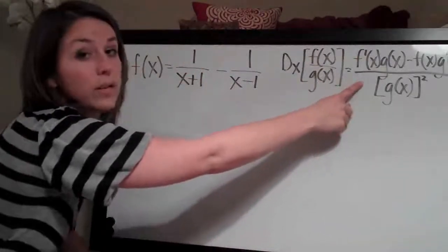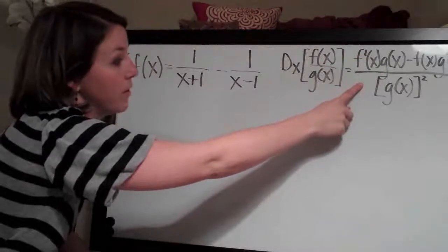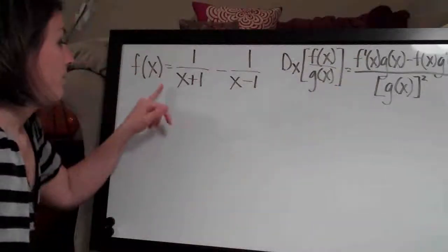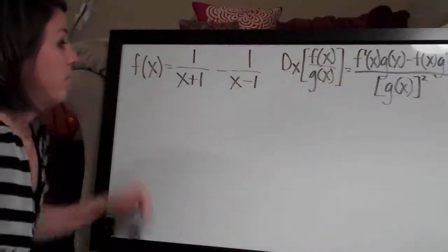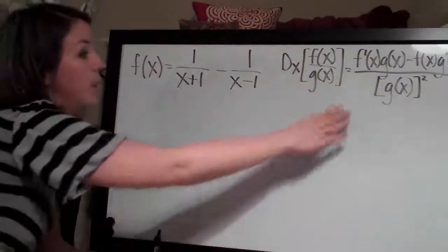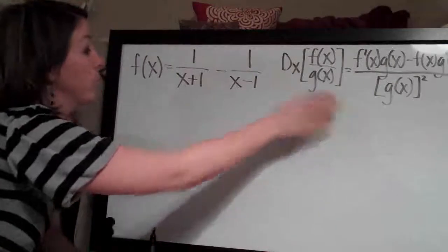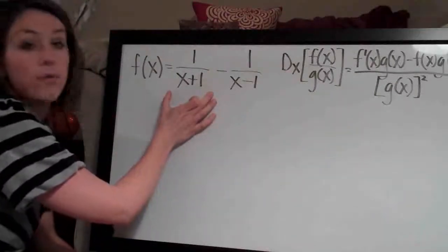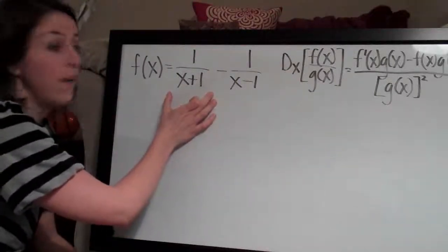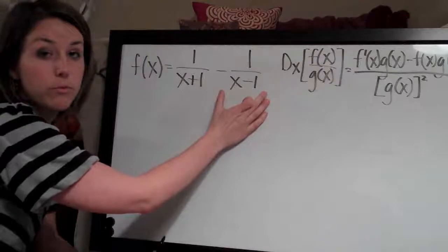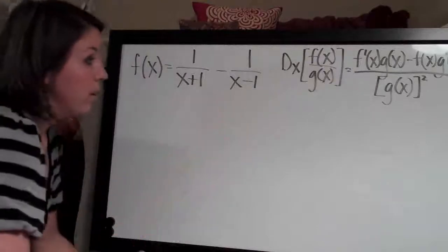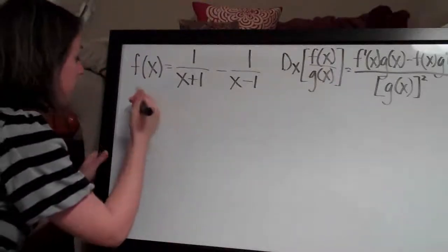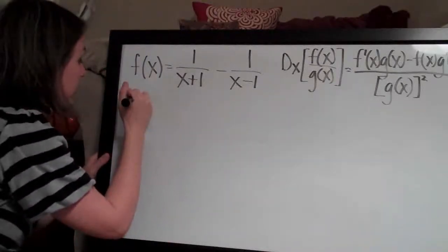You use this formula to take the derivative. This problem is slightly different because we have to apply the quotient rule first to 1 over x plus 1, and then to 1 over x minus 1. So let's go ahead and go through this.